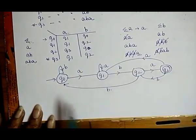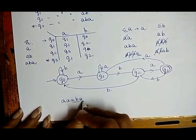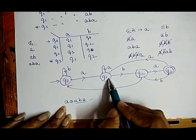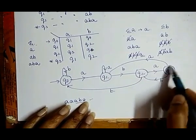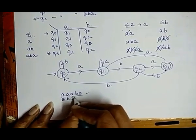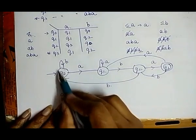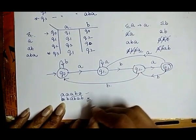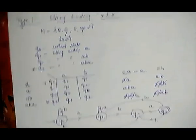We now verify a string to check whether it is accepted by this DFA. For example, the string AAABA ends with ABA, so it should be accepted. Starting from Q₀: A→Q1, A→Q1, A→Q1, B→Q2, A→Q3 — Q3 is the final state, so it is accepted. Next, consider BBABAB, which does not end with ABA. Tracing through the machine, we end at Q2, which is not a final state, so this string is rejected. This is how we create a DFA for type one: string ending with.